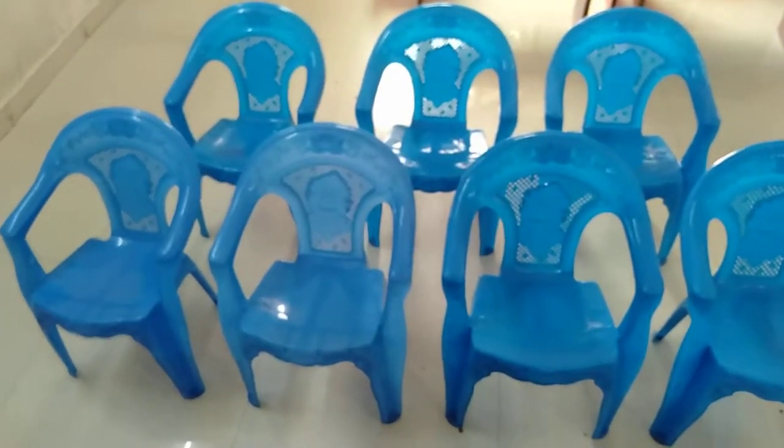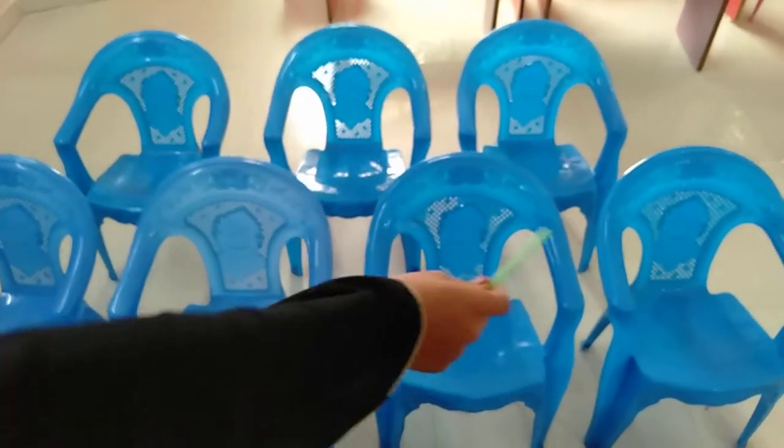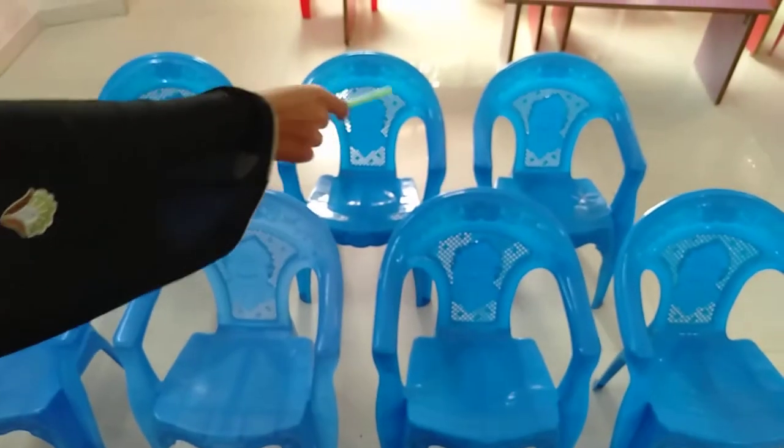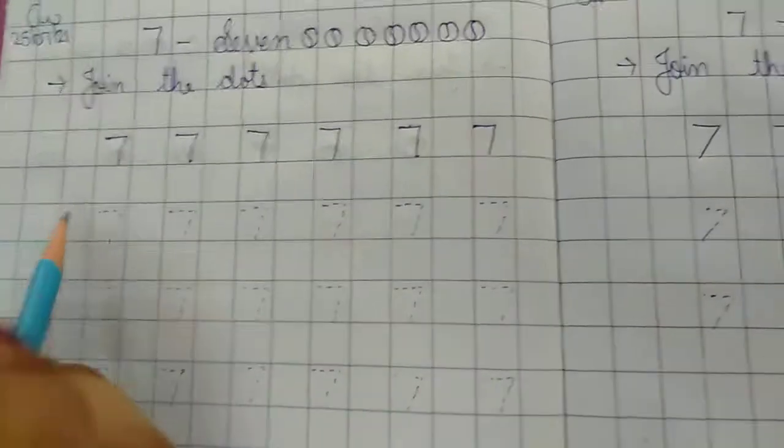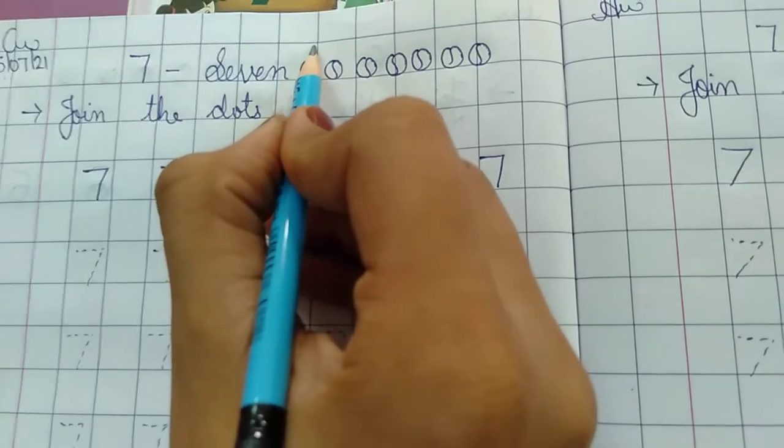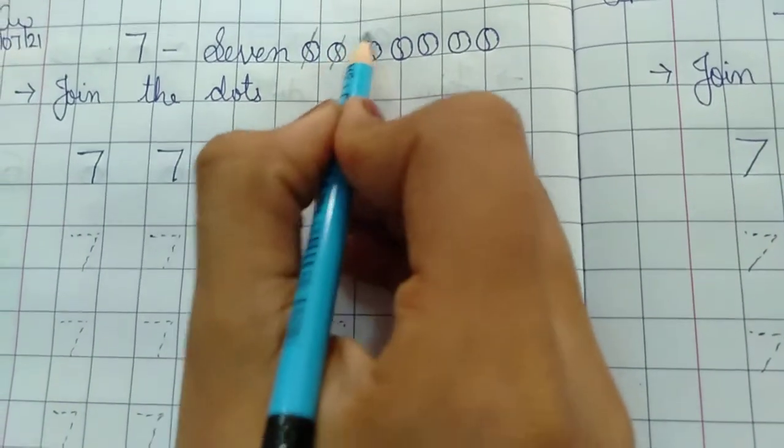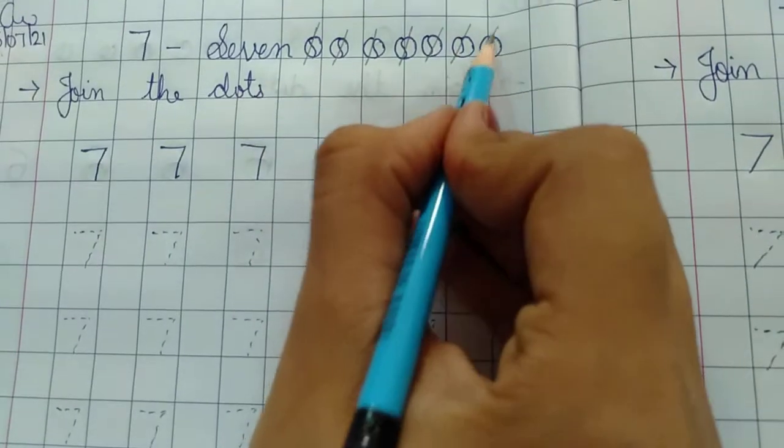Kitne chairs hai yahan per? 1, 2, 3, 4, 5, 6, 7. Number 7. Ab count karenge phele. One, two, three, four, five, six, seven.